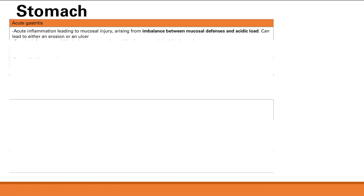Pathology of the stomach. The first one is acute gastritis. Gastritis means inflammation in the stomach, and this inflammation is going to lead to mucosal injury. This inflammation arises from an imbalance between the mucosal defense and the acidic load. If you have inflammation and mucosal injury, you can either get an erosion or an ulcer.